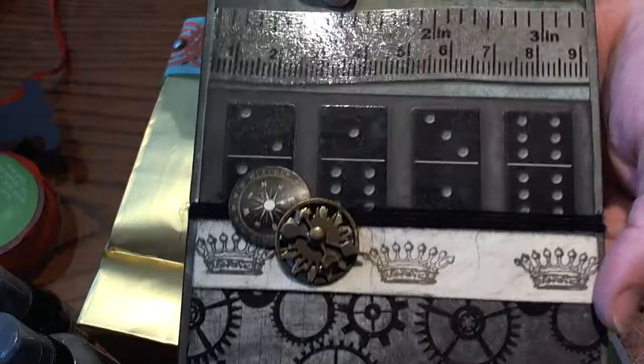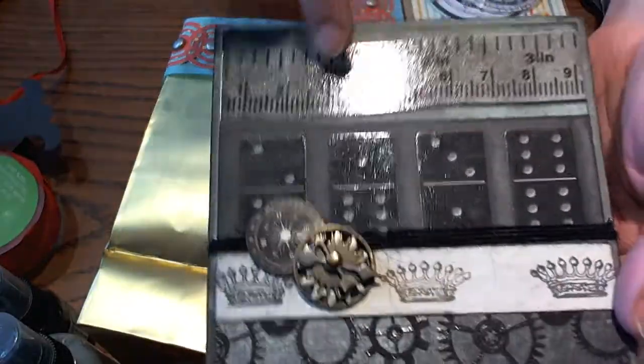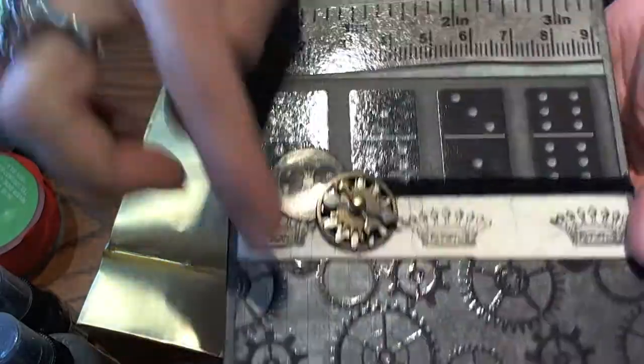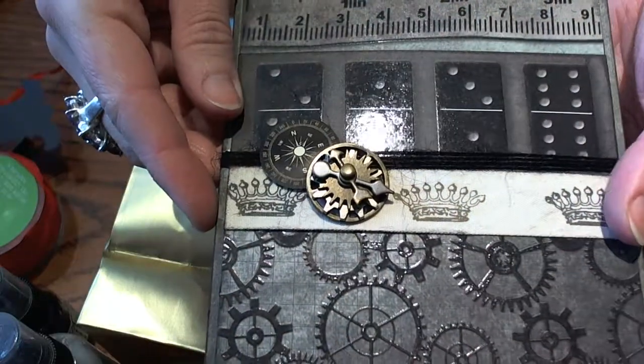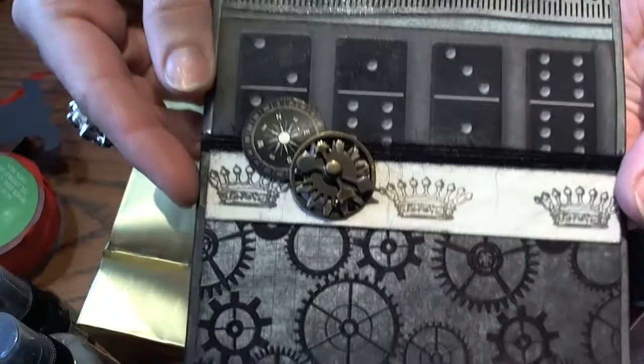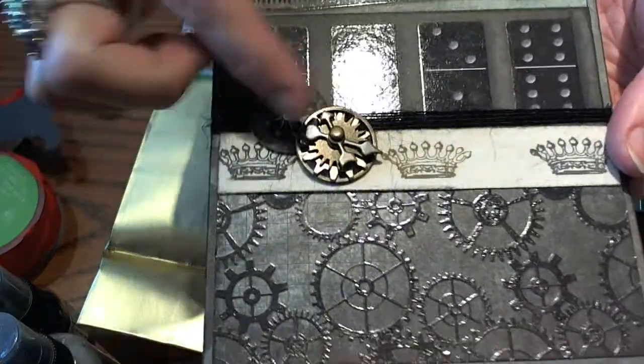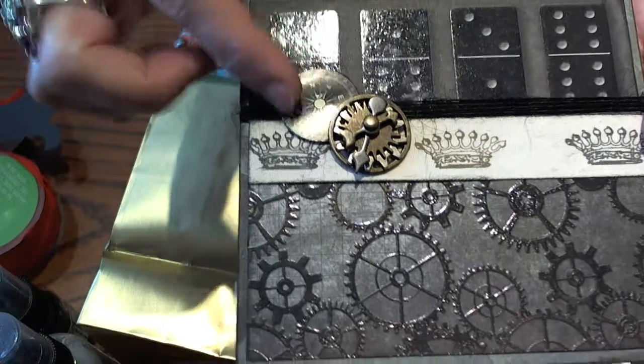A ruler, which to me signifies a tape measure. He always played cards and dominoes and games with us. And then the gears - he's a farmer and he works on all of his implements and things like that. And then I used some of the Tim Holtz gears and a little compass.